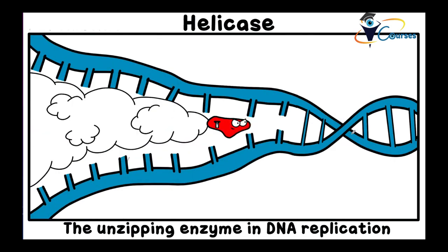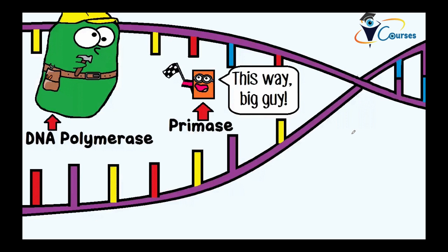After unwinding of the DNA by the helicase, the primase comes in and tells the DNA polymerase where to start. The primase gives the initiation signal for the DNA polymerase in order to begin building the complementary DNA strand.